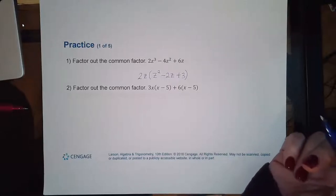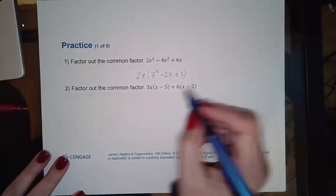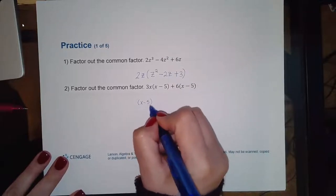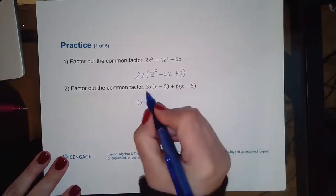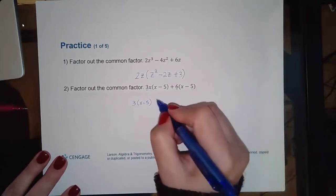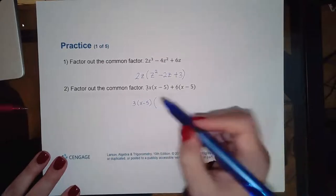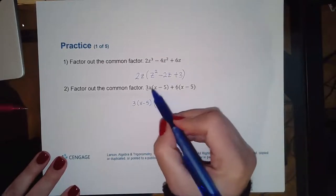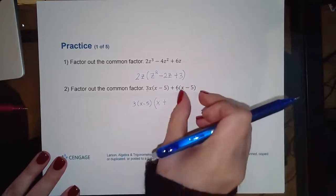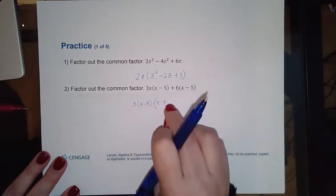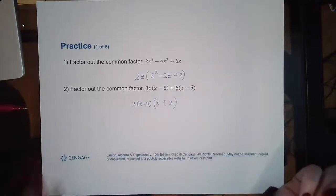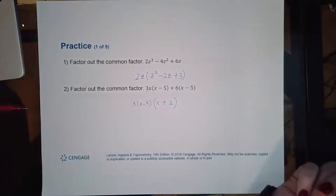The second problem also says factor out the common factor. I can see that (x - 5) is a common factor, and 3 and 6 also share a common factor of 3. So I factor out 3(x - 5). Inside: 3(x - 5) times x gives the first term, and 3 times 2 gives 6 for the second. So the factorization is 3(x - 5)(x + 2).